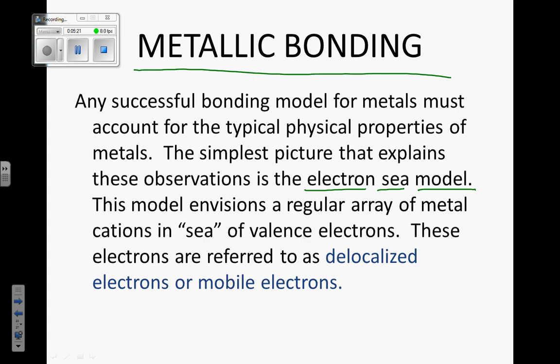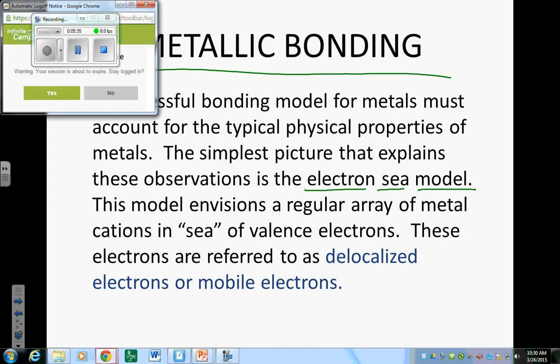Those two words are both very important. All bonding is described in terms of electrons. Ionic bonding is the transfer of valence electrons. Polar covalent is the unequal sharing of valence electrons. Nonpolar covalent is the equal sharing of valence electrons. And metallic bonding is the electron sea model. Do you hear the word 'electron' in all of them?